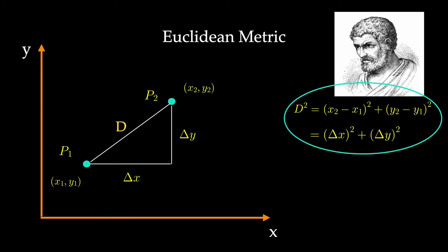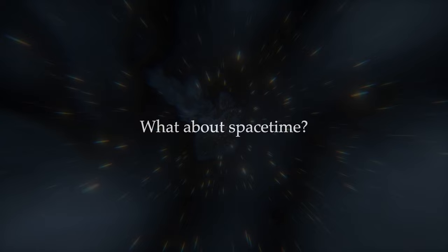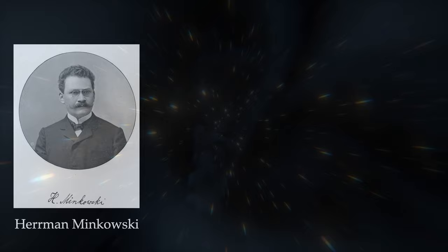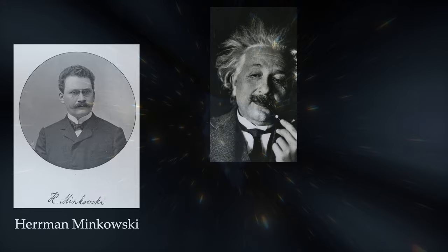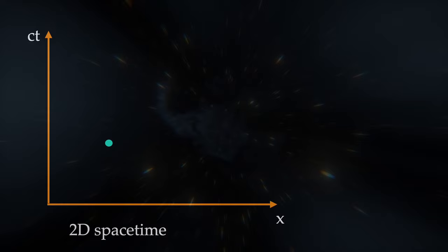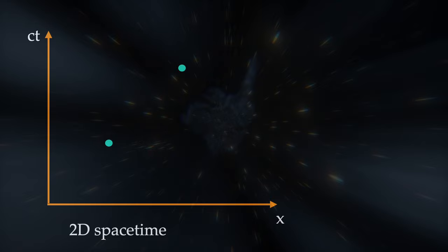But what about spacetime? How could we determine distances between two points in spacetime? We are going to use the Minkowski metric, named after Hermann Minkowski, a Russian-German mathematician who was the first to discover the geometric nature of Einstein's special theory of relativity. This also helped Einstein further develop the theory of relativity and include gravity as a geometric feature of spacetime. Let's take a look at a two-dimensional spacetime with the x-axis for space and the ct-axis for time, where ct stands for the speed of light multiplied by time. This coordinate system is called a Minkowski diagram.